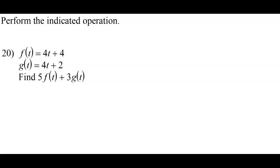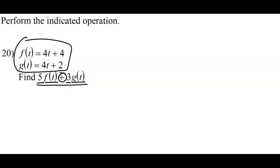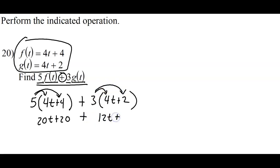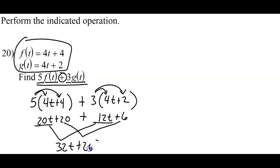Here's another type of problem involving functions — I give you two functions and ask you to combine them. This one is telling me to take the f function, multiply it by 5, take the g function, multiply it by 3, and add those together. The f function is 4t plus 4, and the g function is 4t plus 2. We distribute — 5 times the f function and 3 times the g function — then combine like terms. 20t and 12t are like terms, making 32t. 20 and 6 are like terms, making 26. And there's our final answer.